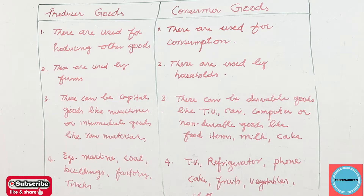Second point: producer goods are used by firms, and consumer goods are used by households — just like your house. Firms can be Reliance, Tata, or any other small or big firm.